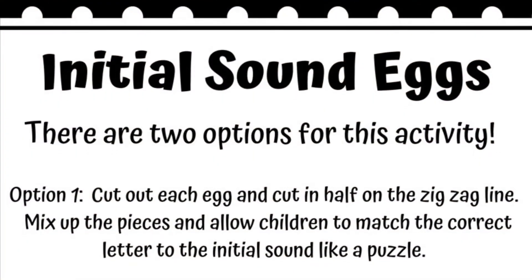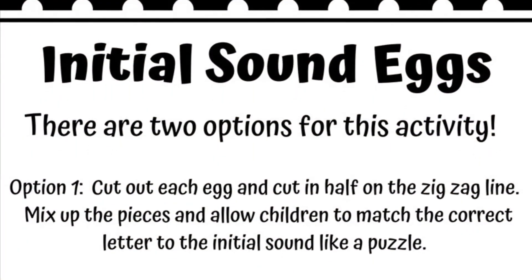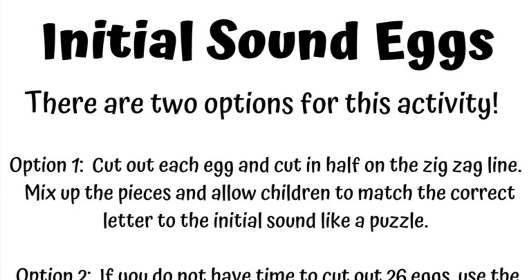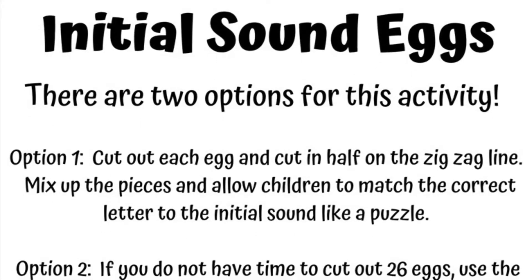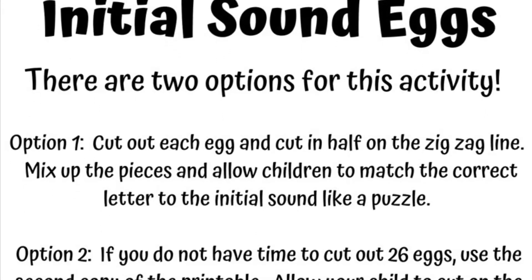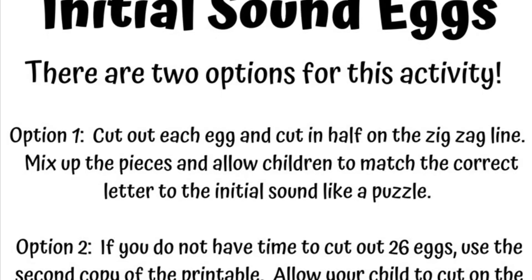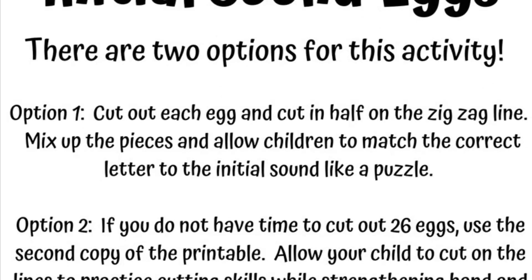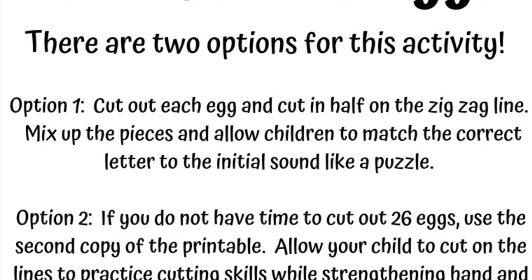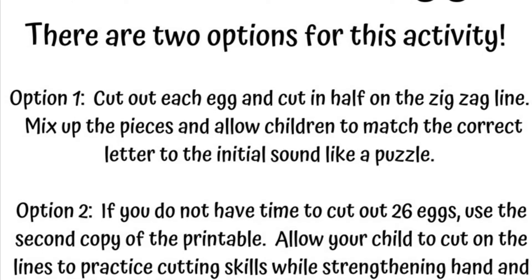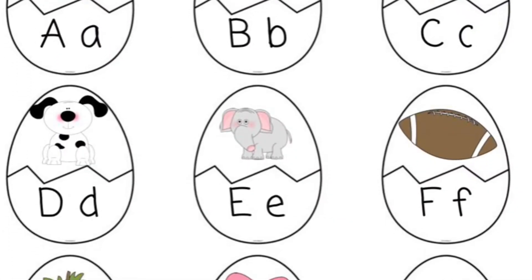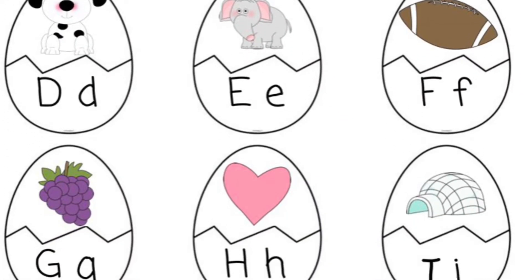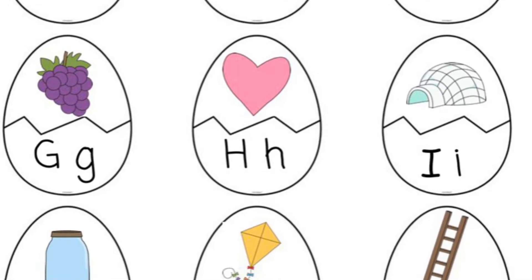Next we have initial sound eggs. There are two options for this activity. Option one: cut out each egg and cut it in half on the zigzag line. Mix up the pieces and allow children to match the correct letter to the initial sound like a puzzle. A picture is on top and the initial sound is to be matched on the bottom.